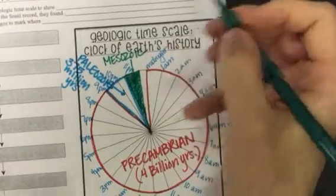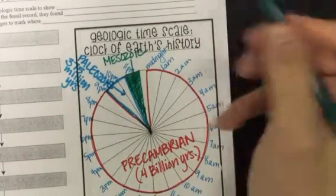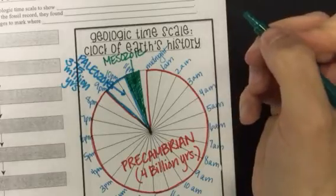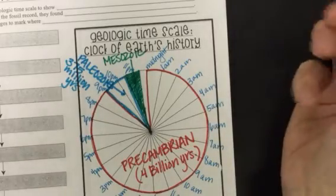And the Mesozoic lasted around 160, 180 million years long.